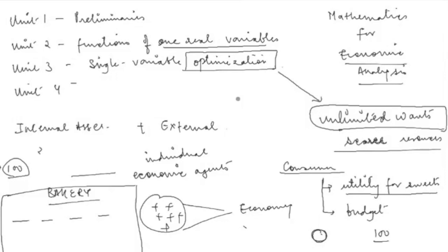So in unit three, we are going to understand single variable optimization. And I have just told you why this is so important in economics, because economics is essentially a study of optimization. And the last unit then is on linear algebra.